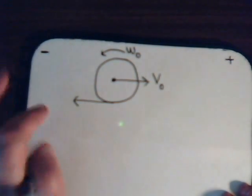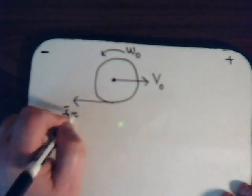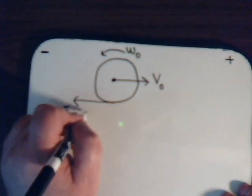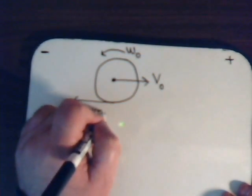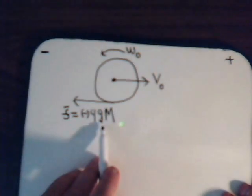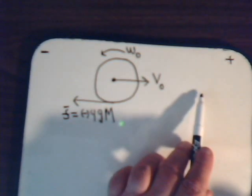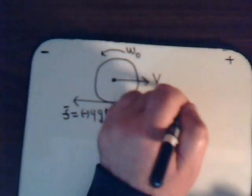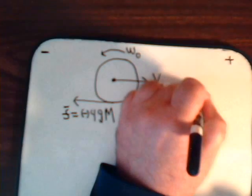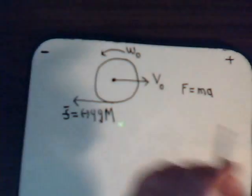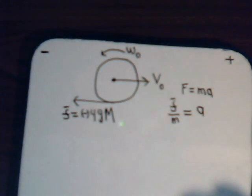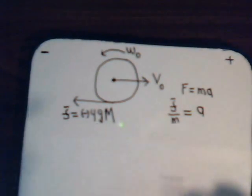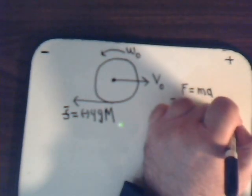F equals minus a frictional coefficient times the gravitational constant G times the mass, where G is 9.8 meters per second squared. As the ball is trying to move forward, the only force acting in that direction is the frictional force. We know F equals ma, so the frictional force divided by the mass equals the acceleration. Dividing by M, we have acceleration equals minus mu G. So the ball is decelerated because friction is slowing down the velocity.